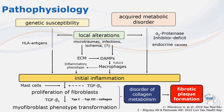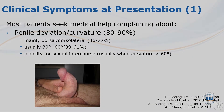The etiology and pathophysiology of Peyronie's disease is multifactorial and not completely understood. The most prevalent etiological theory about curvature tends to be the part of the condition that leads men to seek medical help most often.